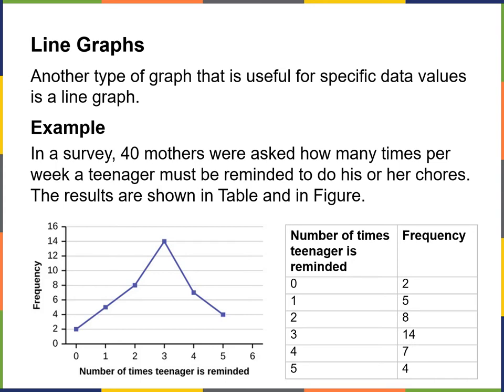Looking at the table, you can see that the number of times a teenager needs three reminders has a frequency of 14, so that would be the center point of that frequency. As the parent of a teenager, I would agree — they tend to need several reminders. On this line graph, you can see that a high number of people need to remind their teenager three times to do their chores.